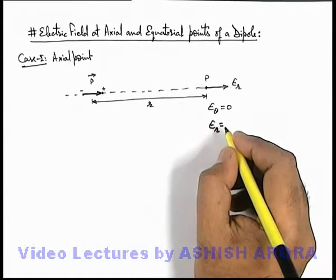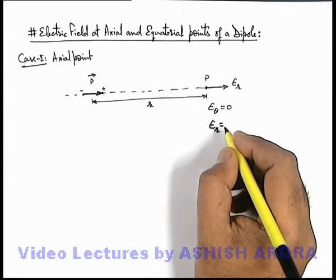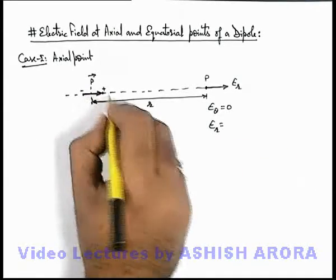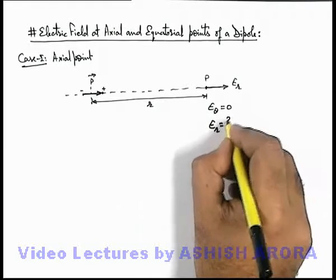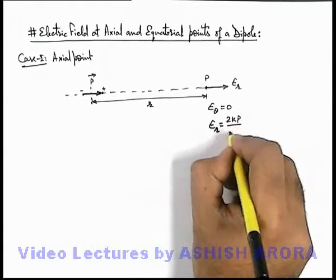The expression was given as 2kp sin(theta) by r³. And here from the equatorial line the angle is 90 degrees, so this will be 2kp by r³.